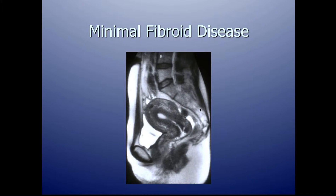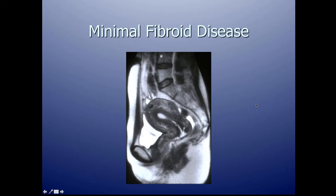Here's an example of a patient who had very severe symptoms of pain and heavy bleeding. The MRI shows just a tiny, less than one centimeter uterine fibroid, which didn't correlate with the patient's symptoms. We know something else is causing the symptoms, so we would not perform a uterine artery embolization on this patient.